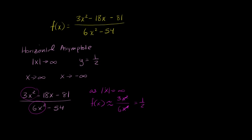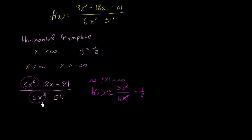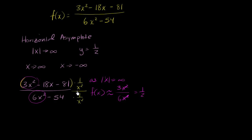Another way to think about this — if you don't like the hand-wavy argument that the highest-degree terms dominate — is to divide the numerator and denominator by the highest degree term, which is x squared. So multiply both numerator and denominator by 1 over x squared. Notice we're not changing the value of the expression; we're just multiplying by 1, assuming x does not equal 0.